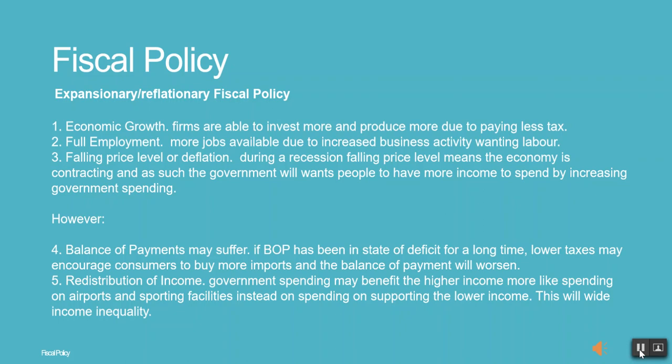Fourth, Balance of Payments May Suffer — if the balance of payments has been in deficit for a long time, lower taxes may encourage consumers to buy more imports and the balance of payments will worsen. Fifth, Redistribution of Income — government spending may benefit higher income groups more, such as spending on airports and sporting facilities instead of supporting lower income groups, which will widen income inequality.